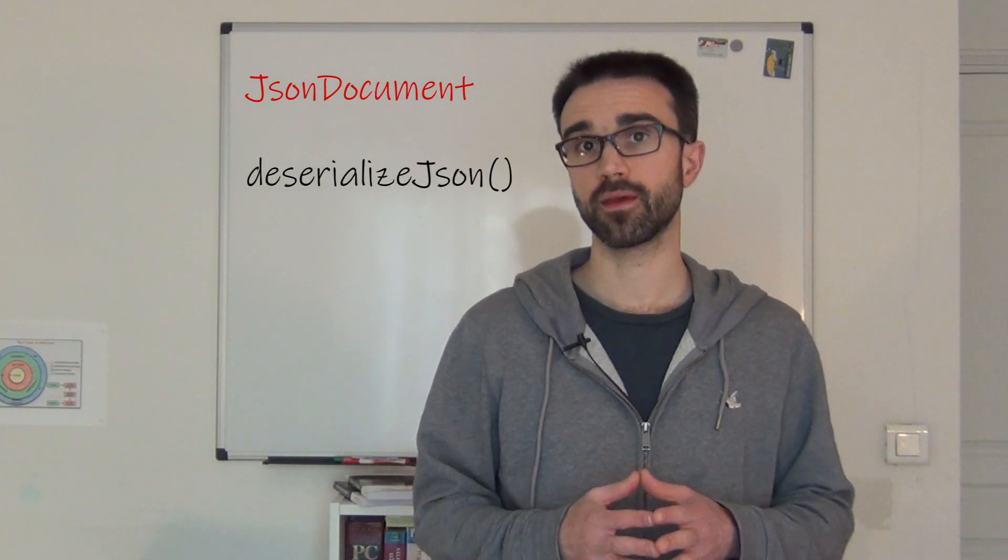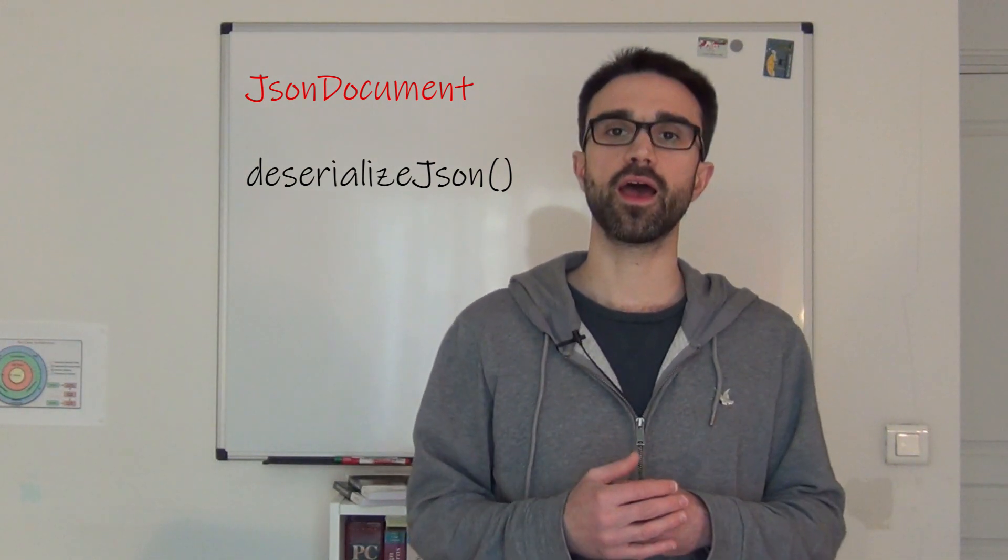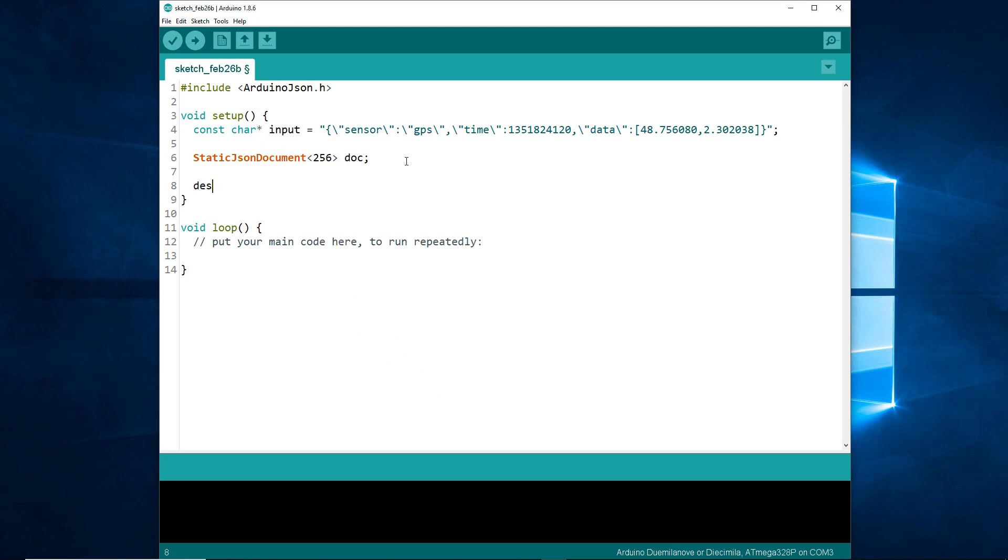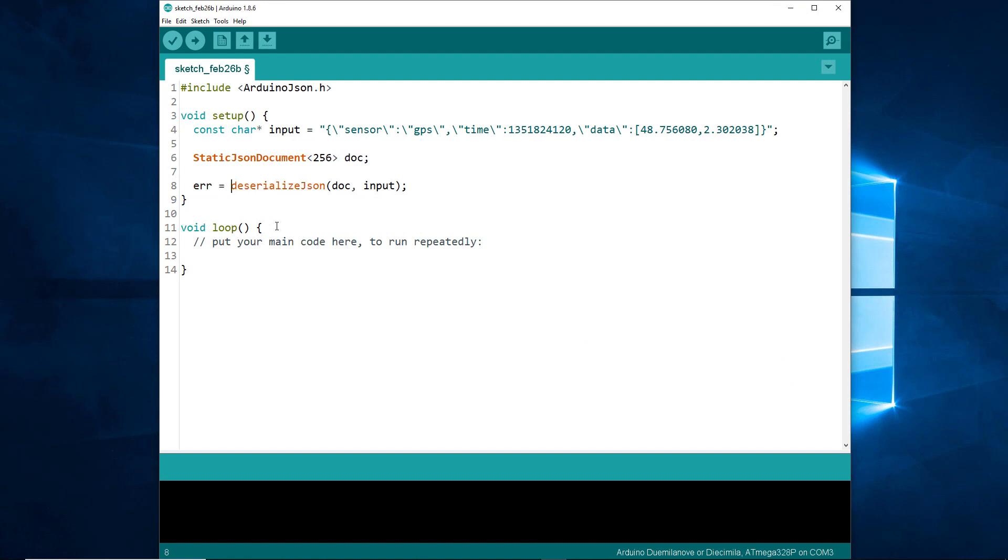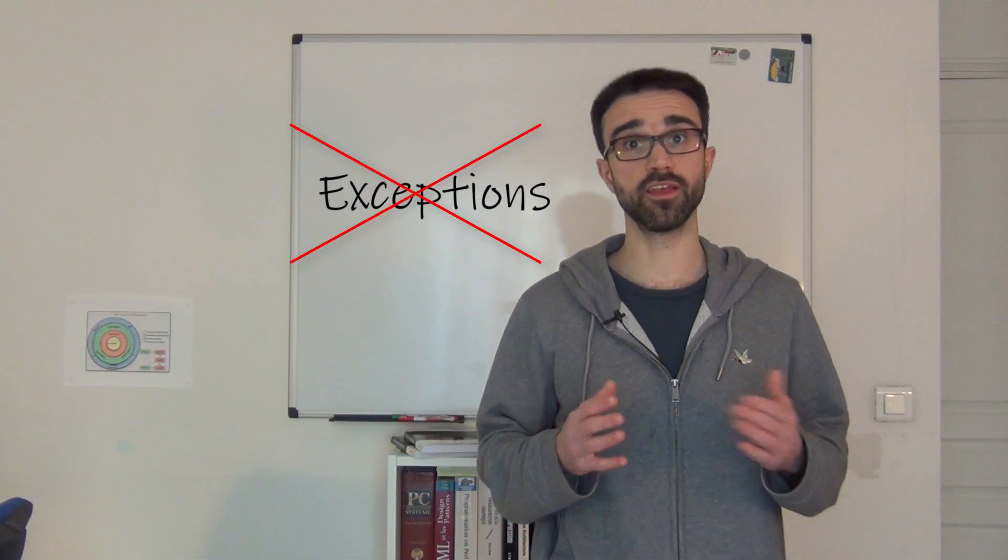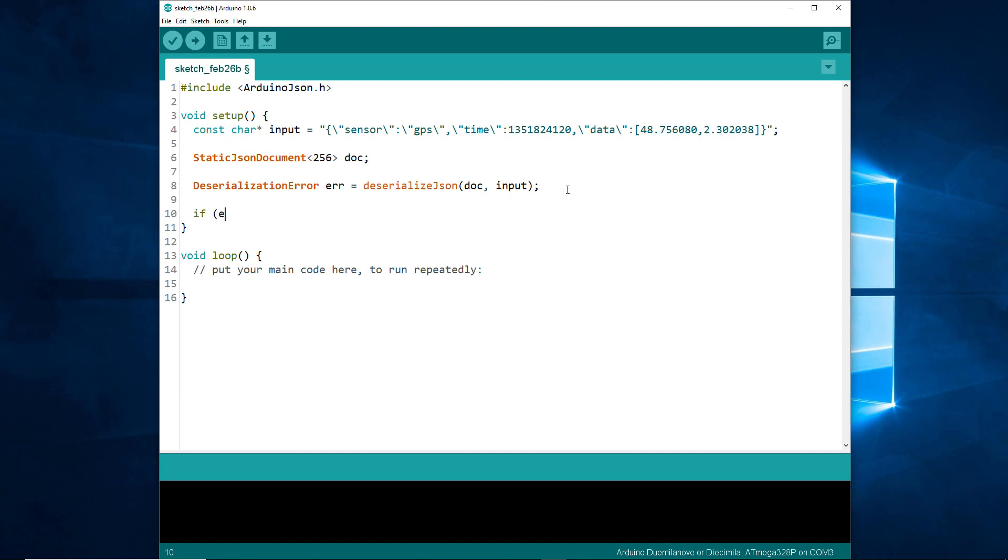This function will parse the input and populate the JSON document. The function takes two parameters: the JSON document and the input. DeserializeJSON also has optional parameters, as you will see in the documentation. This function returns an error status of type deserializationError. It's important to mention that Arduino JSON never throws exceptions. We can use an if statement to test whether the call was successful. To display the name of the error, we can call the cstr member function.